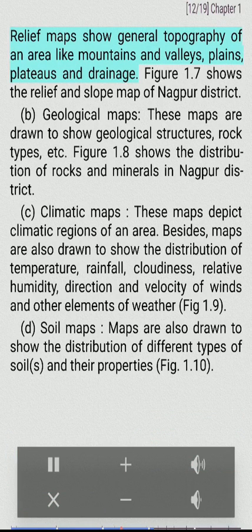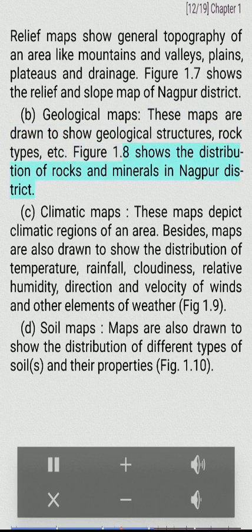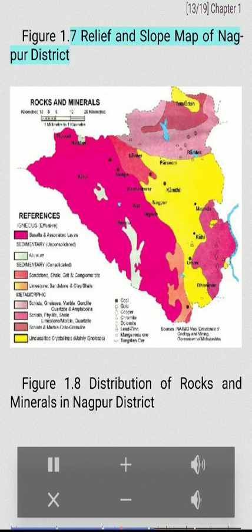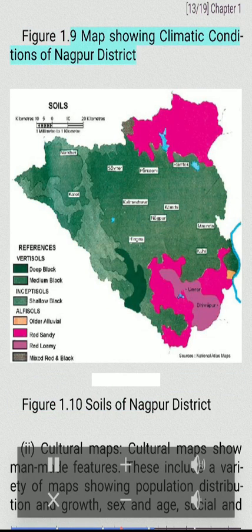Physical maps include: I. Relief maps — showing general topography of an area like mountains and valleys, plains, plateaus and drainage (Figure 1.7 shows the relief and slope map of Nagpur district). B. Geological maps — drawn to show geological structures, rock types, etc. (Figure 1.8 shows the distribution of rocks and minerals in Nagpur district). C. Climatic maps — depicting climatic regions of an area, as well as distribution of temperature, rainfall, cloudiness, relative humidity, direction and velocity of winds and other elements of weather (Fig. 1.9). D. Soil maps — drawn to show the distribution of different types of soils and their properties (Fig. 1.10).